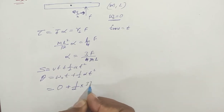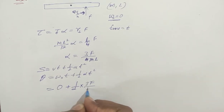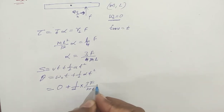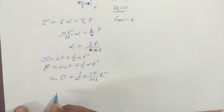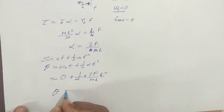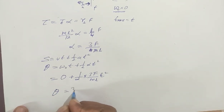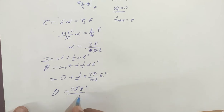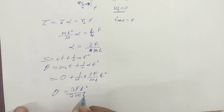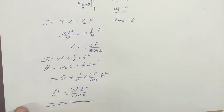The moment of inertia of the rod about its center is mL squared upon 12. Using this, we can find alpha and then the angle rotated during time t.